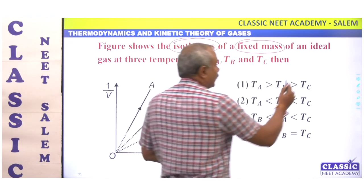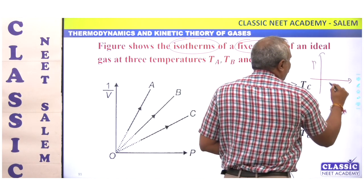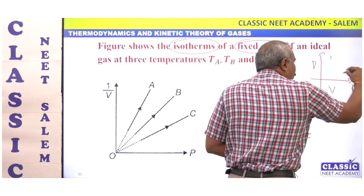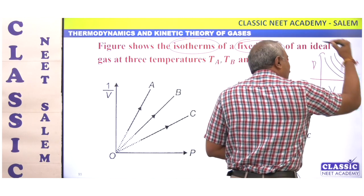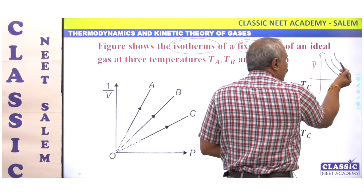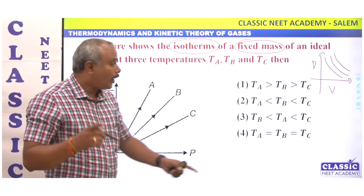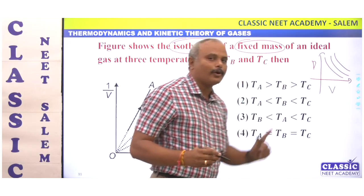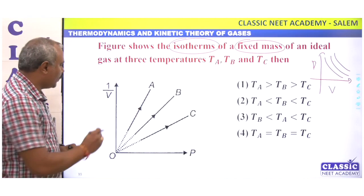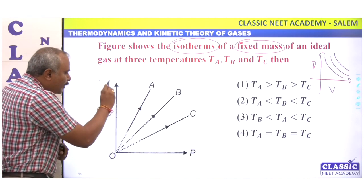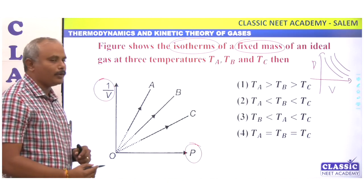For example, if you draw pressure versus volume, P vs V is not what is given here. Instead, 1/V vs P is given. So the graph plots 1/V on one axis and P on the other.